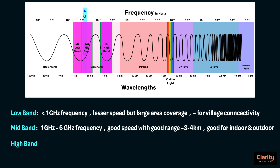The high band uses a slightly higher frequency range, from 24 GHz to 52 GHz as of now. Theoretically it can be extended up to 100 GHz, but currently we have not reached there. With this high frequency, wavelengths are as low as a few millimeters. As a result, this frequency band is called the millimeter wave frequency band.